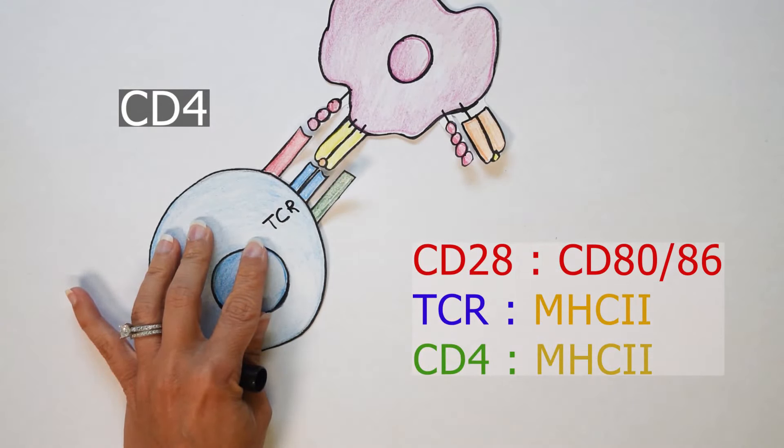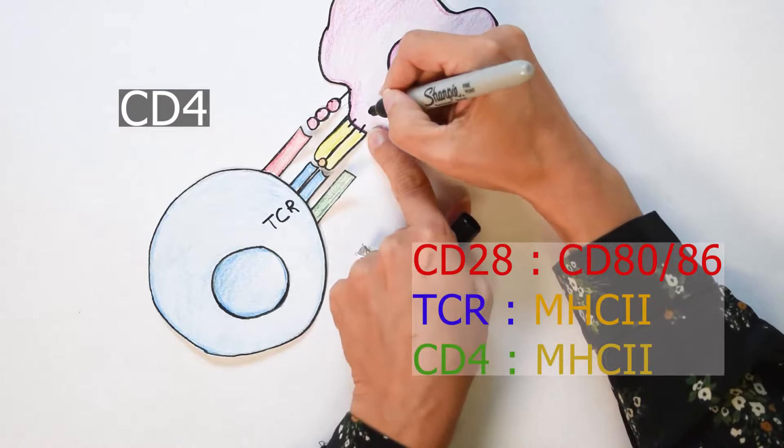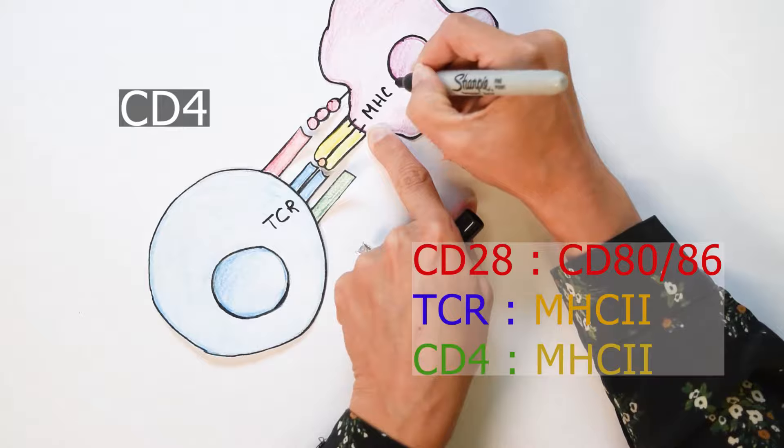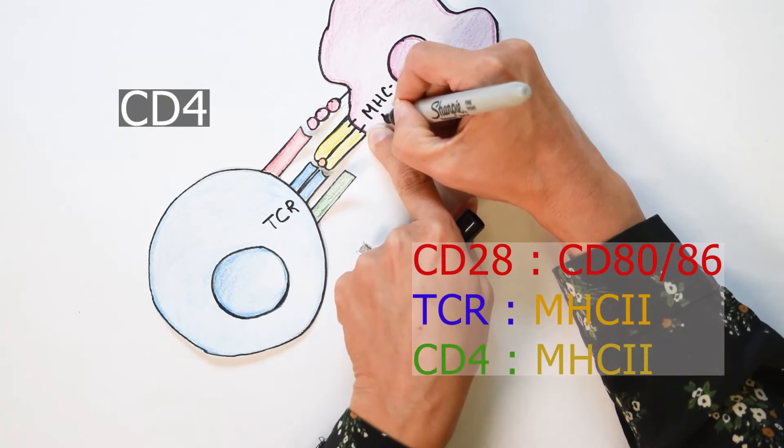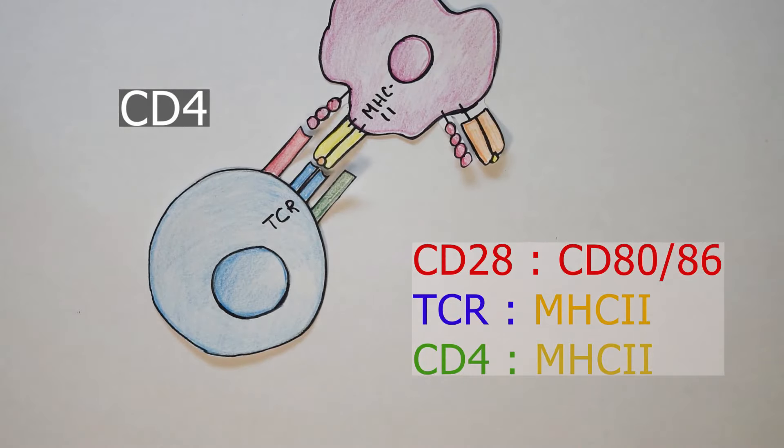So I'm drawing T cell receptor here and then I'll draw MHC class 2 in the macrophage. Basically signal 1 is in green and blue. So as long as the T cell receptor binds MHC class 2 with the presence of the CD4 coreceptor, that could potentially be activating only if the red signal is happening. That's the second part of the signal. If CD28 matches CD80, 86, it can become activated.